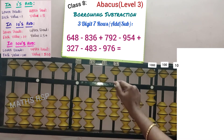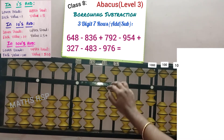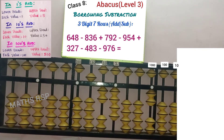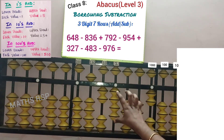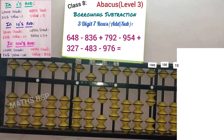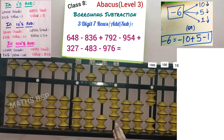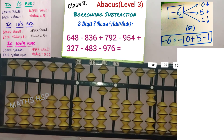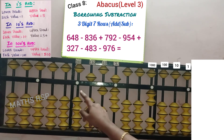Next, do minus 7 in the 10 strad; beads are available, so remove 7 directly — 5, 6, 7. And remove 6 beads from the 1 strad; only 4 beads are available, so direct subtraction is not possible. Apply combination formula for subtracting 6: combination minus means move beads in the down direction. So move 10 beads down direction and 5 downward — 5 plus 1 equals 6 — so move 1 bead down direction. Therefore minus 976 completed.